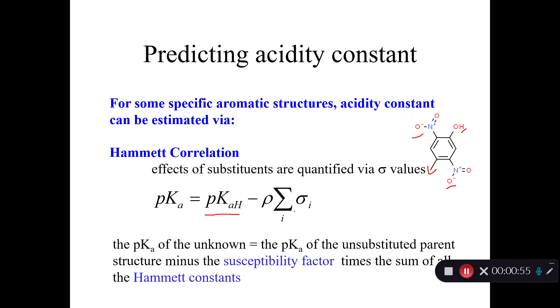So then you would subtract off of that what are called Hammett constants, the sigma values. So there's a different Hammett constant for each of these three substituents, the two nitro groups and the methyl group. And you have to multiply them by rho, which is a slope factor.